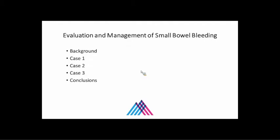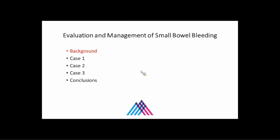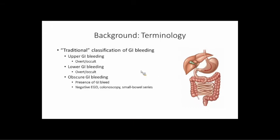It is a big problem — I think we've all shared patients with small bowel bleeding and it's very frustrating and very challenging. I'll try to share some pearls on how we approach it. Here's a brief outline: we'll go through some background, a couple of cases to illustrate points, and then draw some meaningful conclusions. A little bit of background on terminology — this is something we all learned in medical school but it's really changed a lot. The traditional definitions of GI bleeding were that upper GI bleeding is anything above the ligament of Treitz.